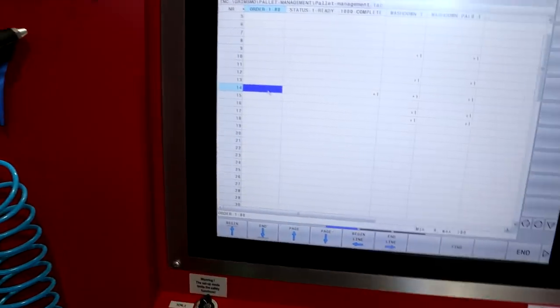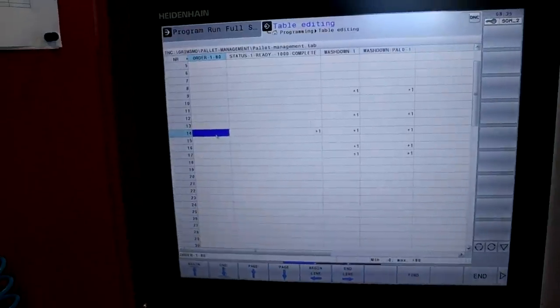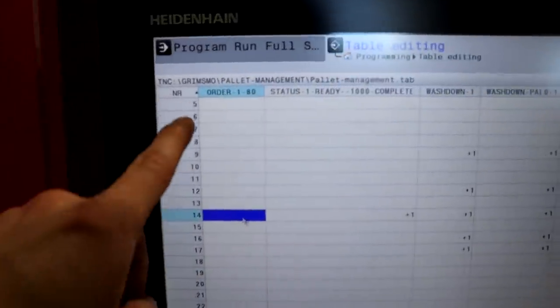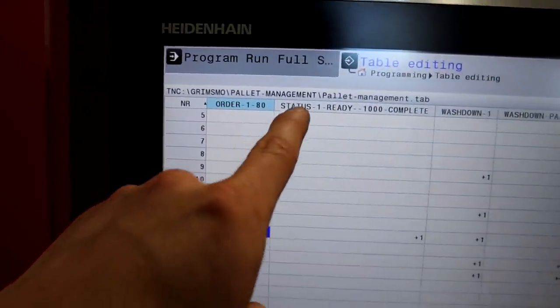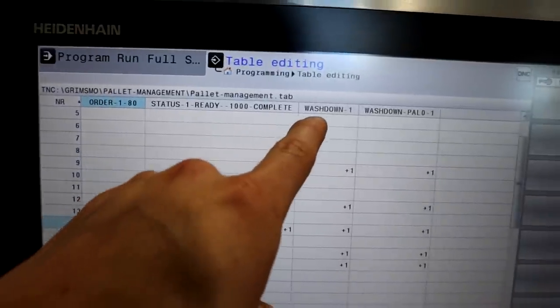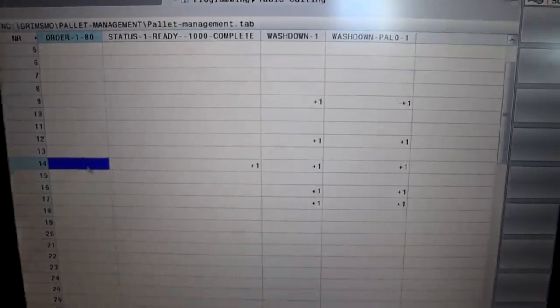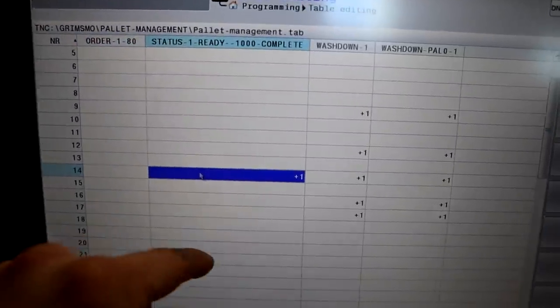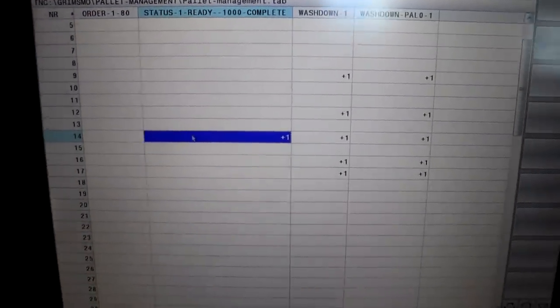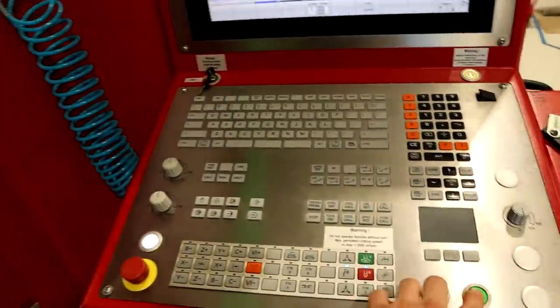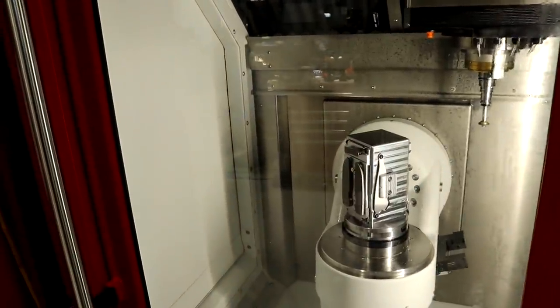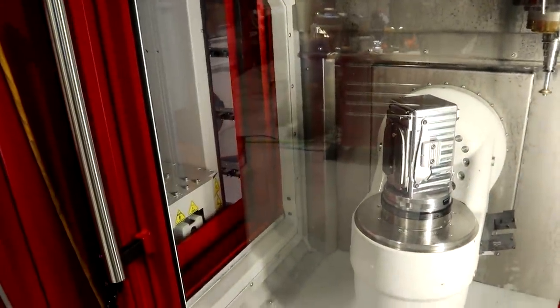Real quick, I've been working on something for the past week. This is basically called a table file, it's a spreadsheet essentially. I have columns called order 1 to 80, status 1 is ready, 1000 is complete. If I want to run pallet 14, which I do right now, I change it to a status of 1, and I want to wash down both times. And I just run it, and it works so good.